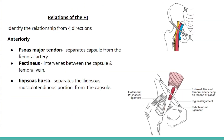The hip joint has several important relations in four directions. Anteriorly we can identify the psoas major tendon, pectineus muscle, and iliacus. The external iliac and femoral artery lie on the tendon of psoas major, so the psoas major tendon separates the joint capsule from the femoral artery. Medially, the pectineus muscle intervenes between the joint capsule and the femoral vein, and the iliac bursa separates the iliopsoas musculotendinous part from the joint capsule.